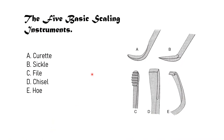Let's talk about the five basic scaling instruments. The five basic scaling instruments are: curette, sickle, file, chisel, and hoe. In this picture you can see the curette, sickle, file, chisel, and hoe respectively.